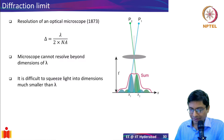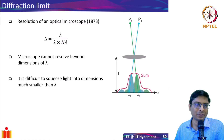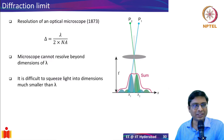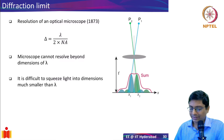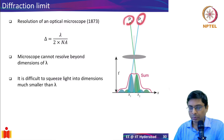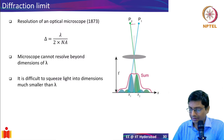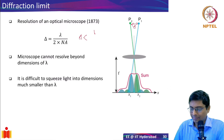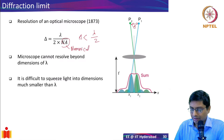You might be familiar with the diffraction limit which was introduced by Abbe back in 1873. What he said was, if you have two dots or two objects which are very very close to each other, we cannot resolve them clearly. He quantified it: if two objects P1 and P2 have a distance delta between them less than lambda over 2NA, where NA is numerical aperture and lambda is the wavelength.